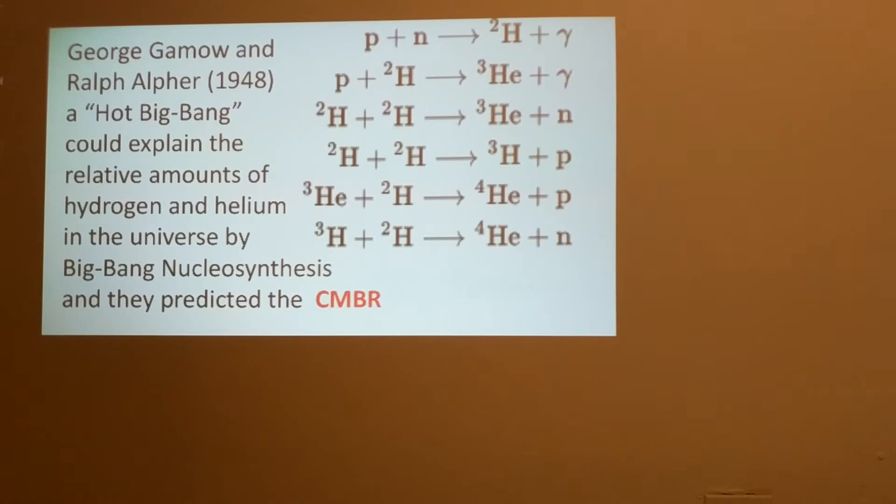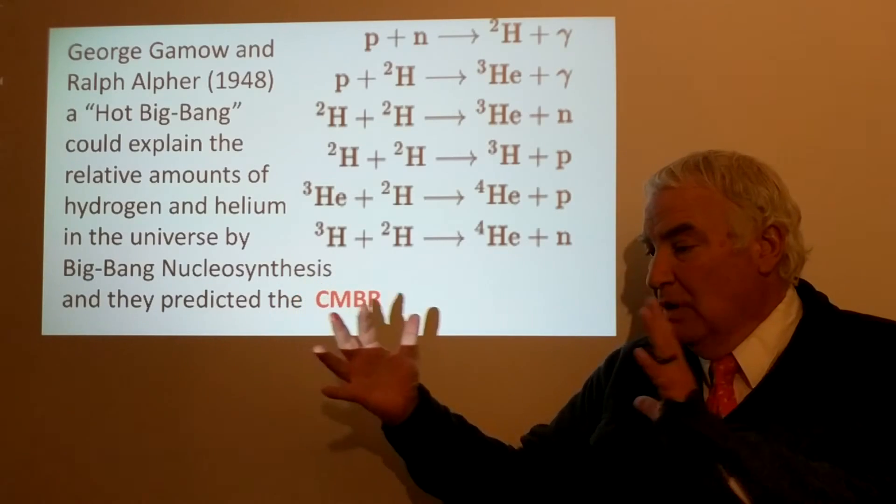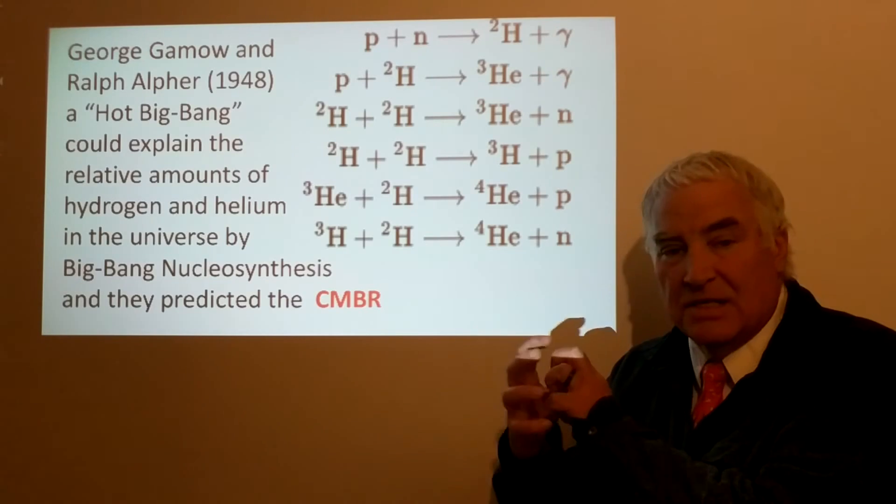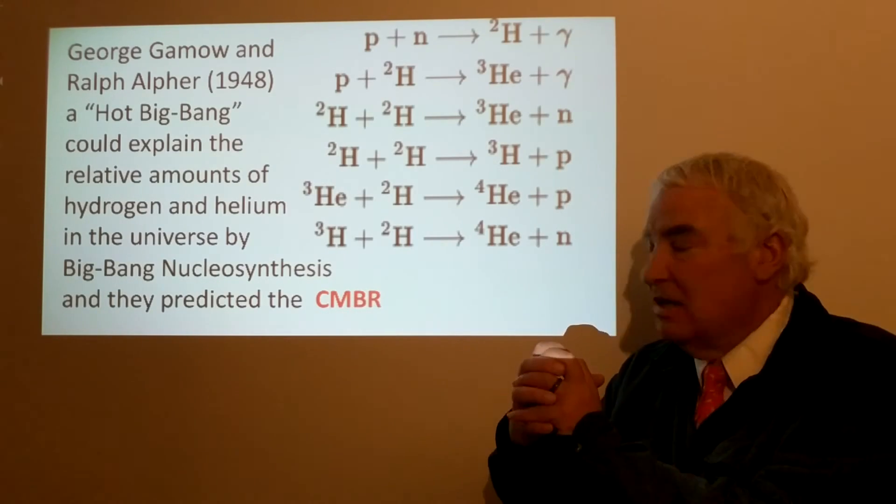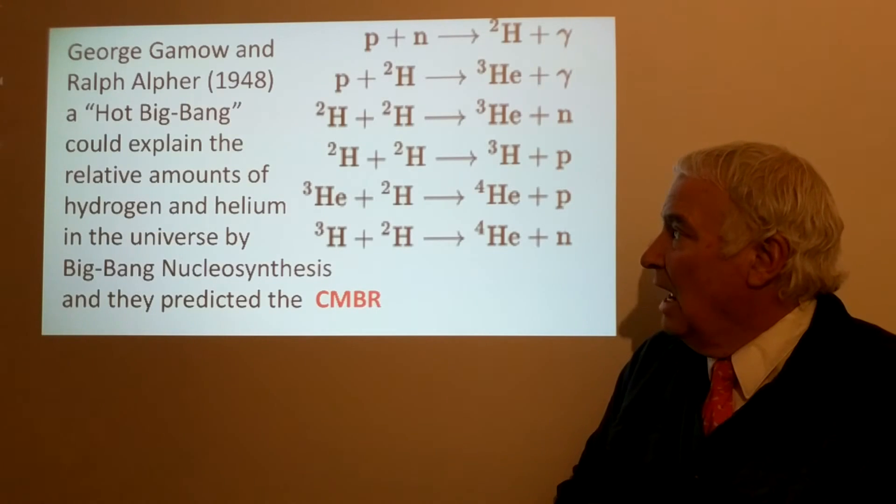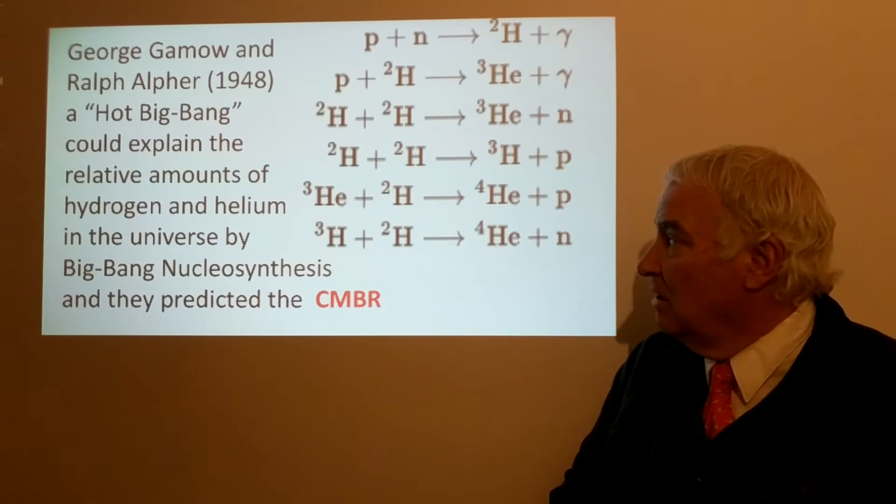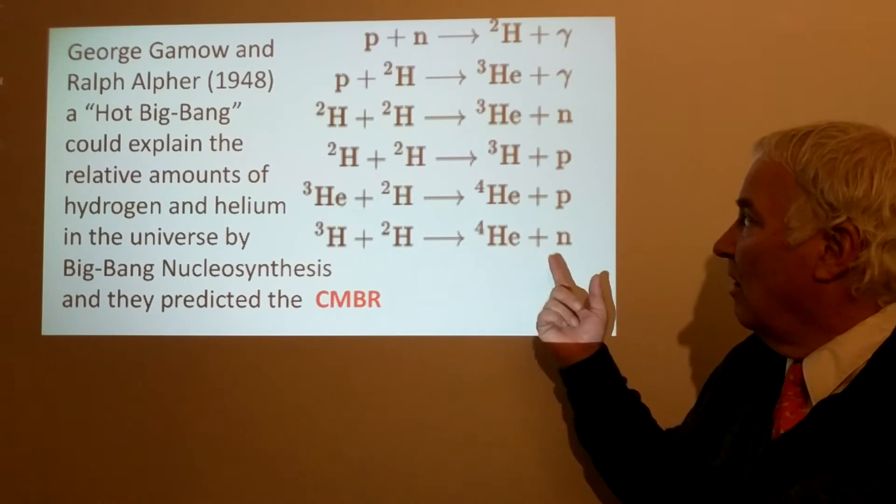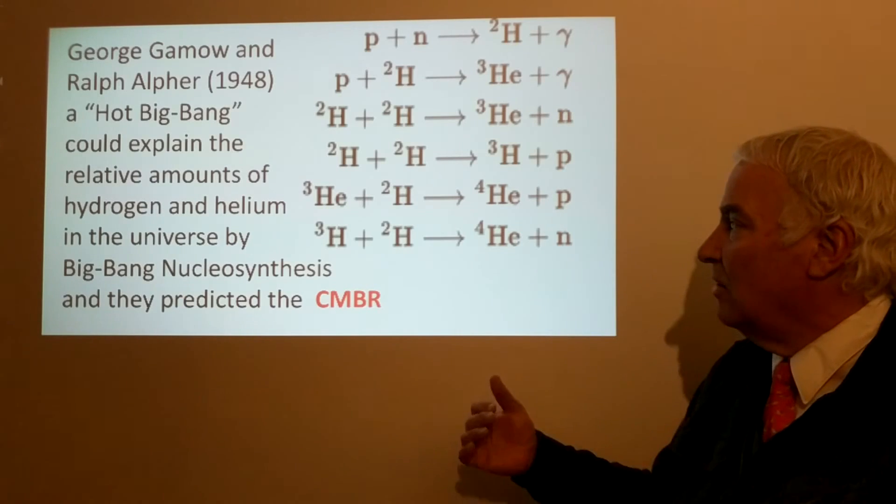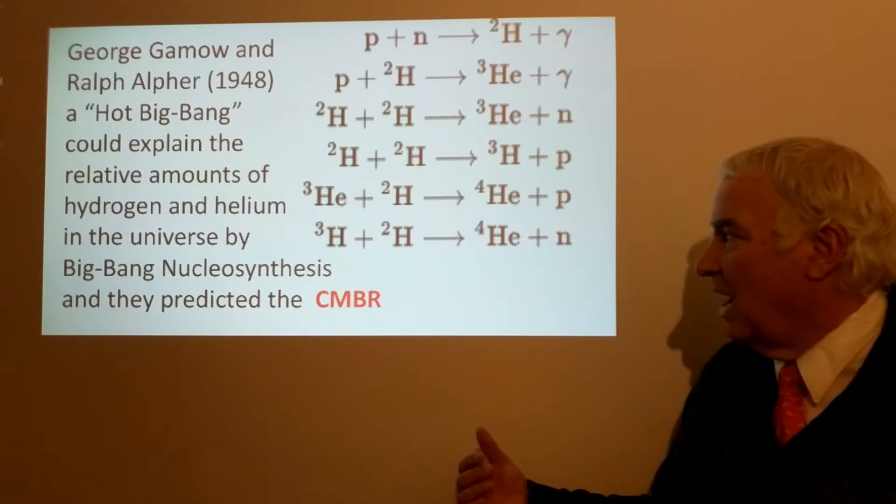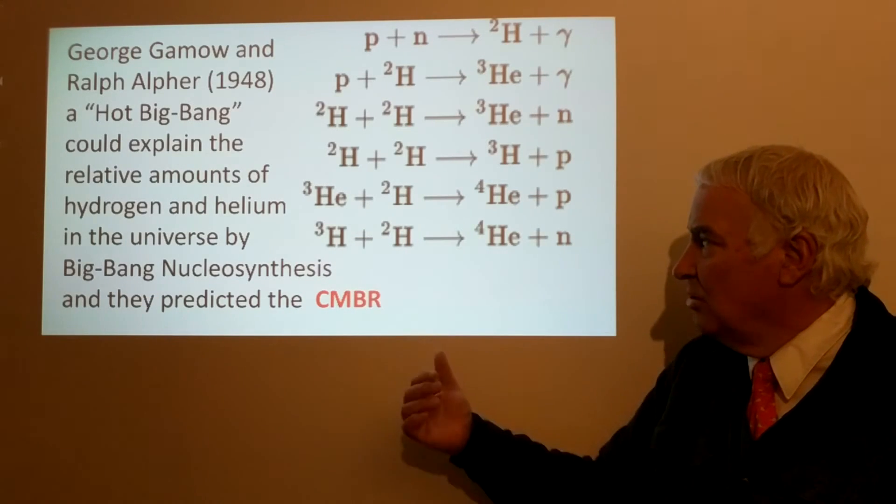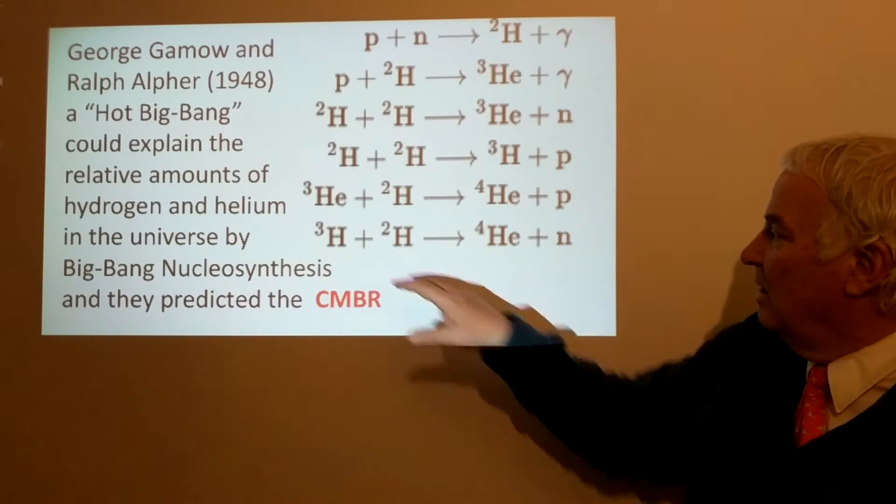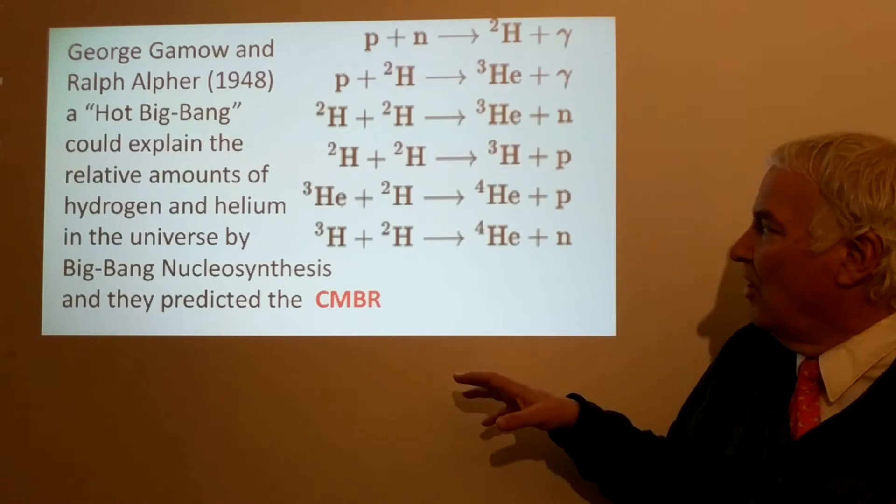George Gamow and Ralph Alpher in 1948 thought about the fact that if we take this to the extreme and run this backwards, we would get a very hot, compressed universe at some time in the beginning of the expansion. In these first minutes of that expansion, hydrogen and helium fusion was taking place, so some helium was produced. The relative amounts—how much helium compared to the amount of hydrogen—hydrogen is just a proton with an electron orbiting it, and helium has two protons and two neutrons with two electrons orbiting around.